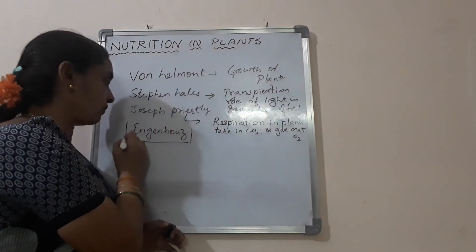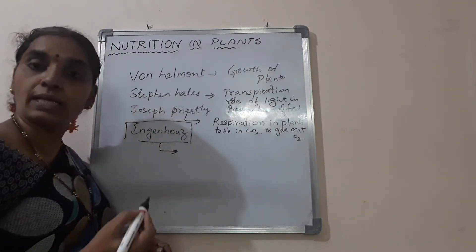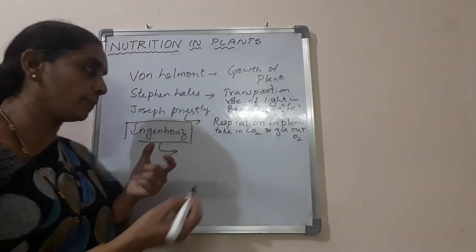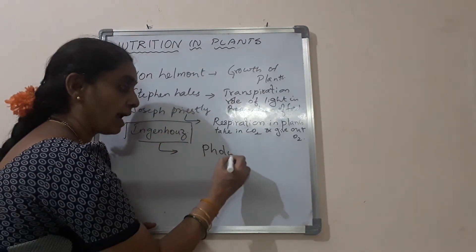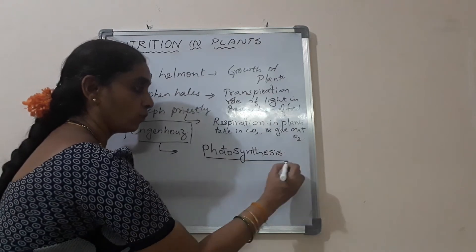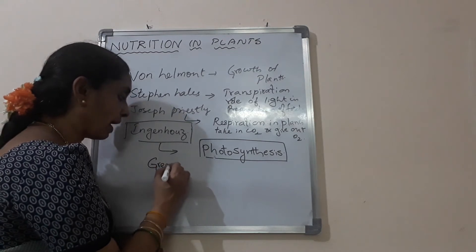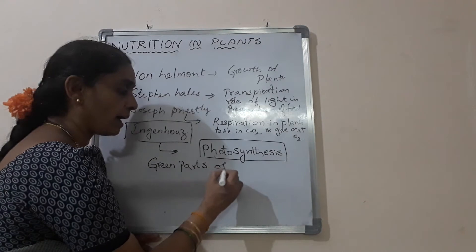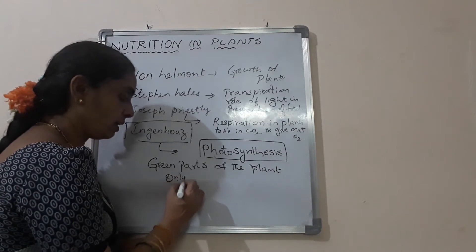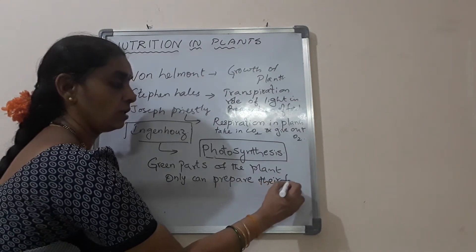Now coming to Jan Ingenhousz — this is the topic we deal with today. Jan Ingenhousz was a scientist who said that only the green parts of plants take part in the process of photosynthesis. The name photosynthesis itself tells us that plants prepare their own food with the help of light. Only the green parts of the plant can prepare their food.